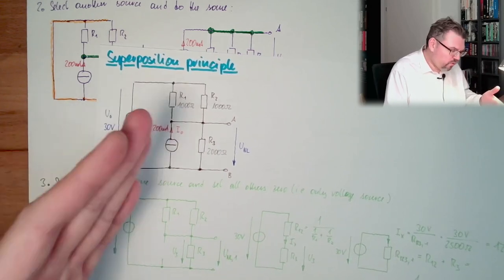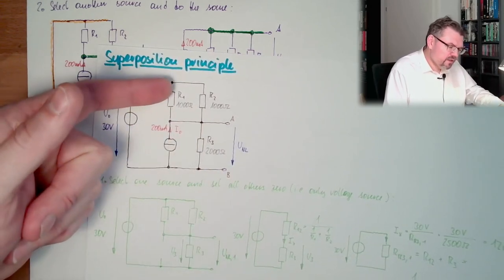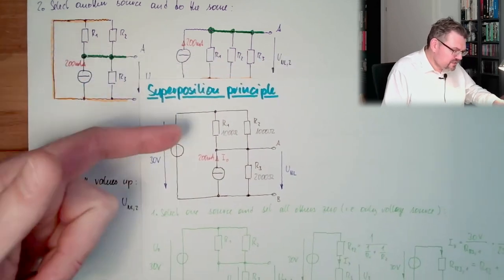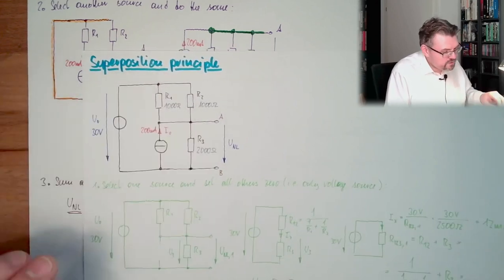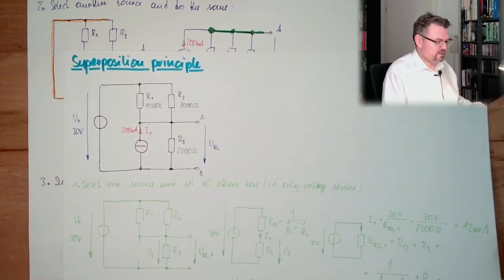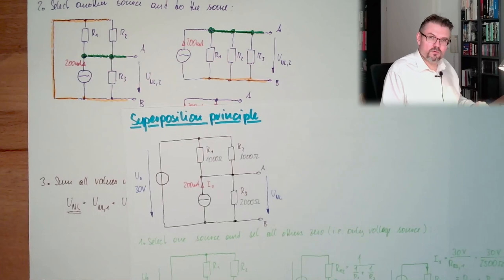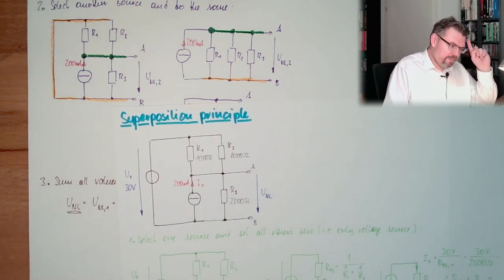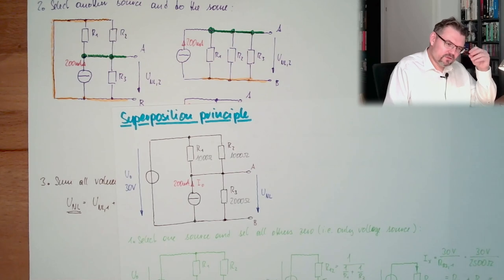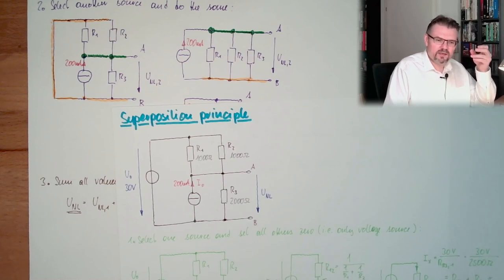You can do this for all elements. If you want to know the voltage on R1, just calculate the voltage on R1 with just the voltage source, or with just the current source, and add those two.